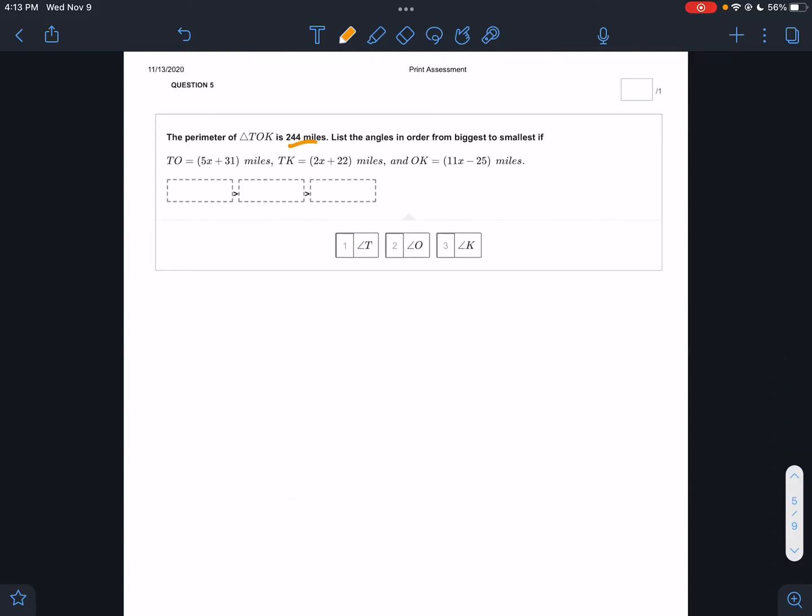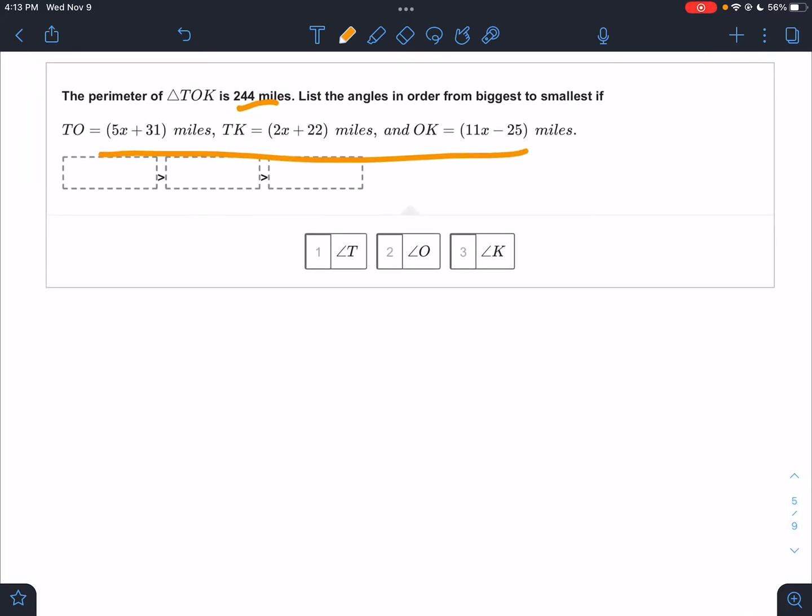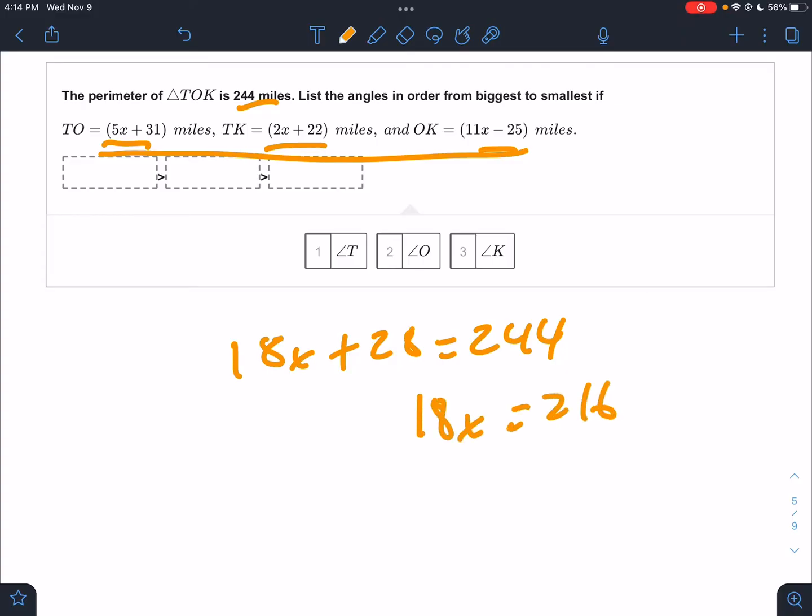Here I have a perimeter and I have sides. Well sides have to add up to the perimeter. So if I add these three together I get 18x, I get 31, I get 30, 53 minus 25, I get 28. And that has to equal 244. Add the sides together, get the perimeter. I'm just going to type this in, 244 minus 28, I get 18x equals 216, divided by 18, I get x equals 12.